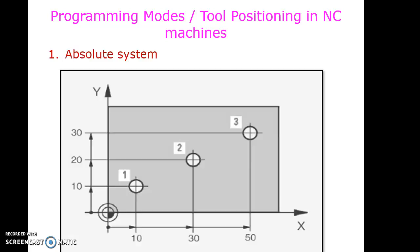In the absolute system, take this example: it is a plate in which I want to drill three holes — one, two, and three. The machine or tool reference point is the origin at 0,0. To move the drilling cutter from this origin to the first hole location, we input X=10 and Y=10. The tool will automatically go to that location and perform the drilling operation.